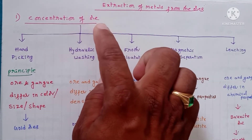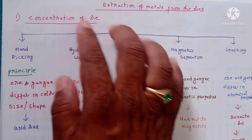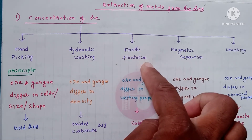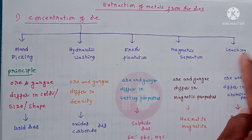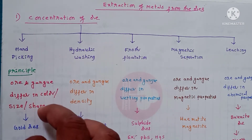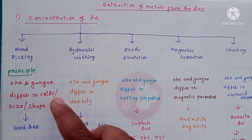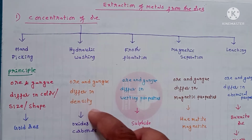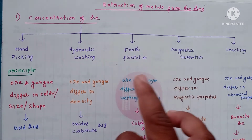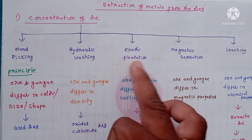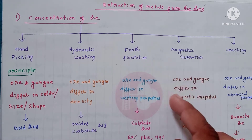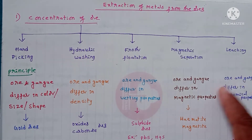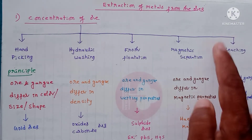The next topic is extraction of metals from ores. There are four main steps involved. The first is concentration of ores, also called dressing of ores. Under this, five methods are used: hand picking, hydraulic washing, froth flotation, magnetic separation, and leaching. The principle: if ore and gangue differ in color, size, and shape, use hand picking; if they differ in density, use hydraulic washing; if they differ in wetting properties, use froth flotation.